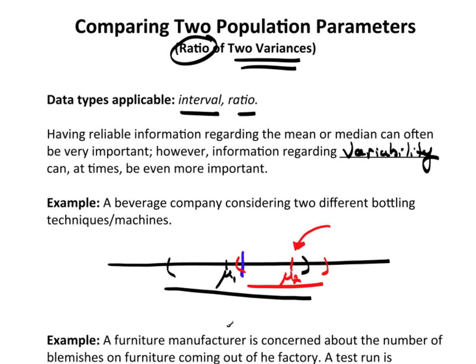The whole idea of looking at variability between two or more processes is actually referred to as process control. We won't get into that in this course, but that is a whole area of study. How do you control both the mean and the variability of two or more processes that are taking place?